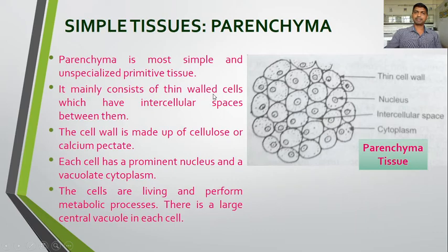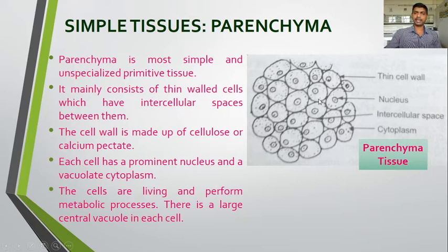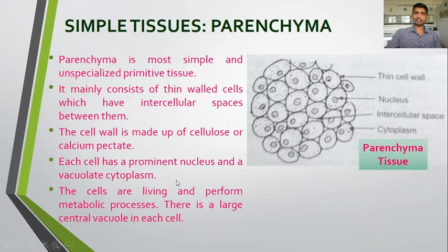Parenchyma is just derived and has become permanent from the meristematic tissue. It mainly consists of thin-walled cells which have intercellular spaces between them. The cell wall is made up of cellulose or calcium pectate. Each cell has a prominent nucleus and vacuolate cytoplasm. In meristematic tissue there is no vacuole, or if present it is small, but here in the permanent tissue — parenchyma — a vacuole is present.